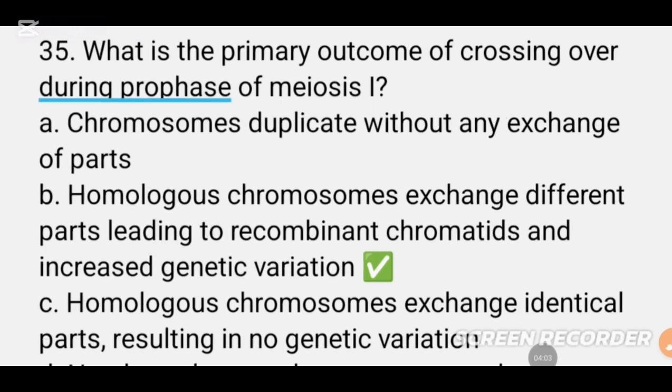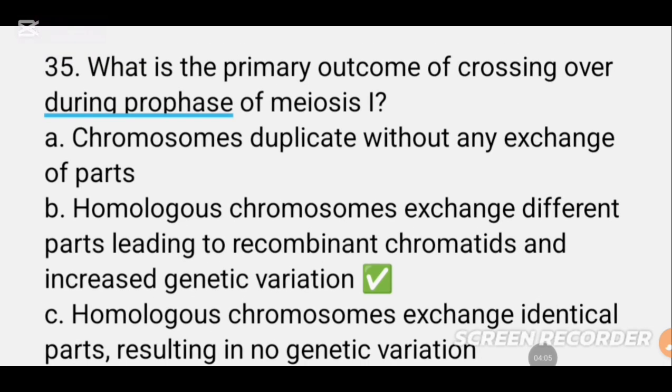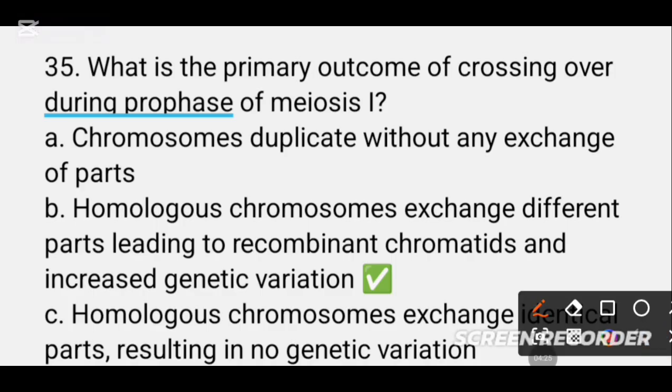MCQ number 35. What is the primary outcome of crossing over during prophase of meiosis-1? The primary outcome of crossing over during prophase of meiosis-1 is Option B. If you have homologous chromosomes, you can have the same pairs of chromosomes or parts exchanged, leading to genetic differences. So genetic variation is the primary outcome of meiosis-1 crossing over.